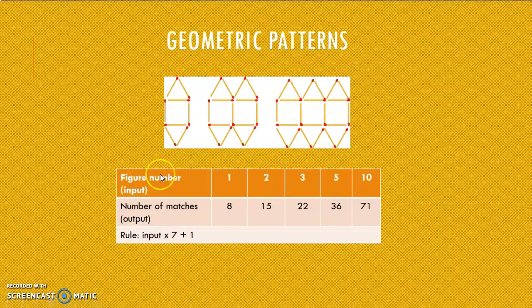Let's have a look. Here I said my input, or my figure number, multiply by 7 plus 1. Let's see if it holds true for everything. 1 times 7 is 7, plus 1 is 8. 2 times 7 is 14, plus 1 is 15. 3 times 7 is 21, plus 1 is 22.